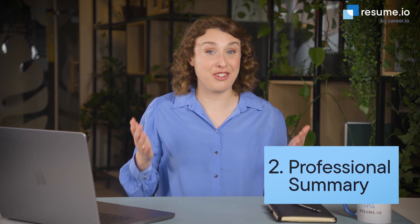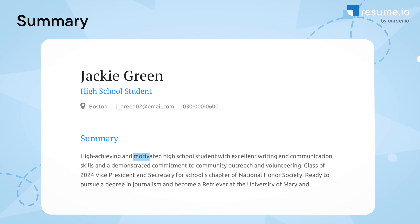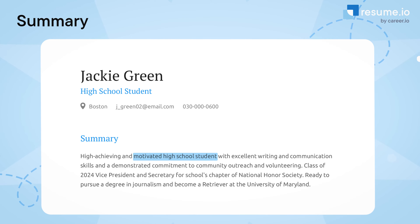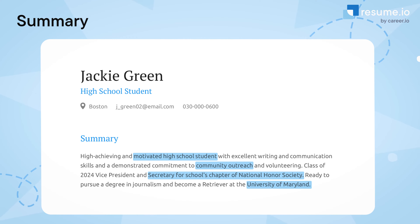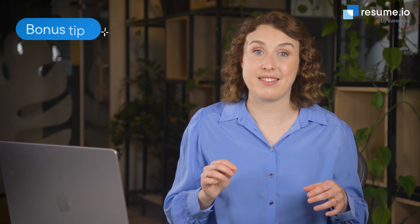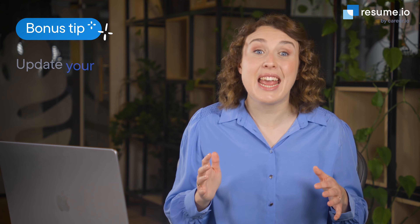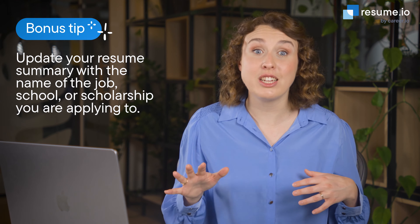The next thing we're going to write is your summary. These three to four sentences describe your high school experiences, accomplishments, and future ambitions. The goal is to include only your most impressive achievements to get the reader to look at the rest of your resume. Make sure to update the summary with the name of each scholarship, college, or job you apply for.